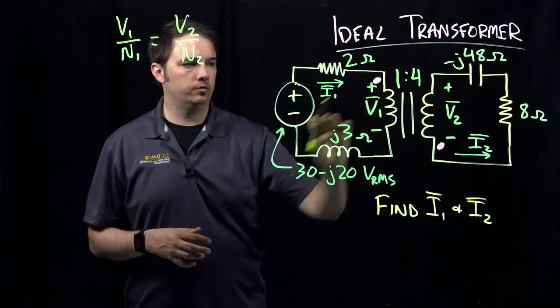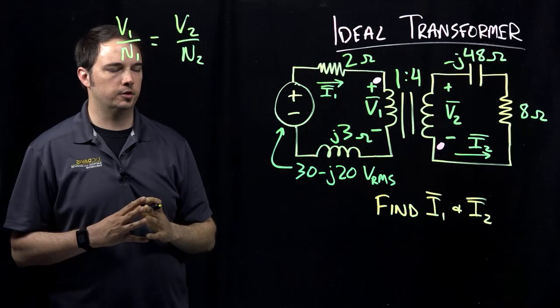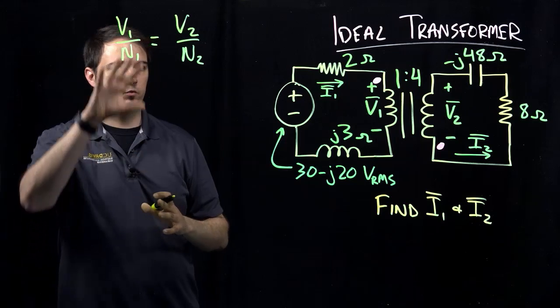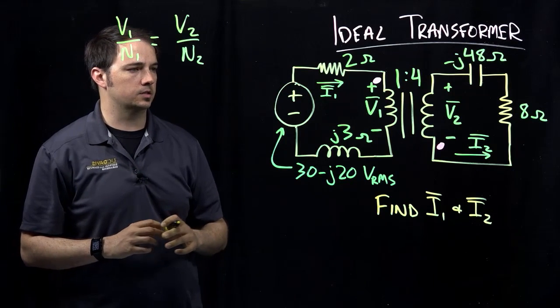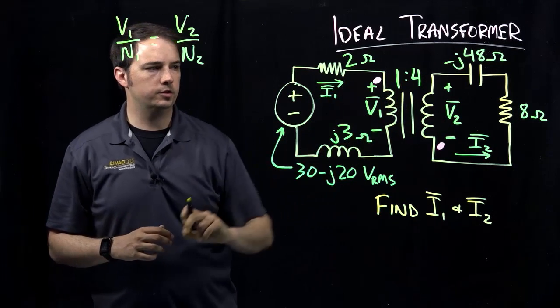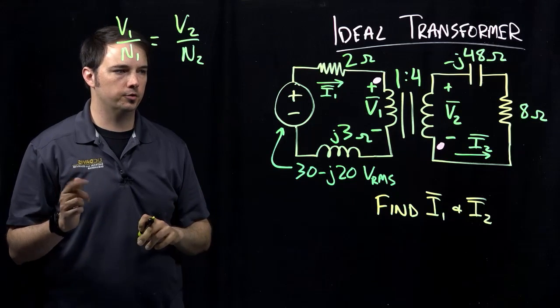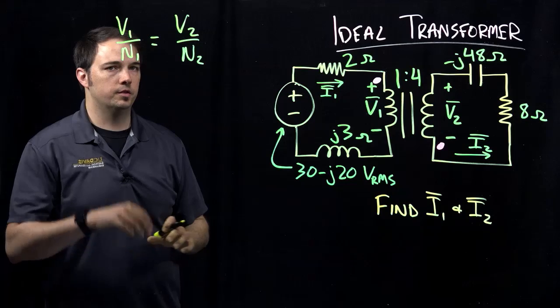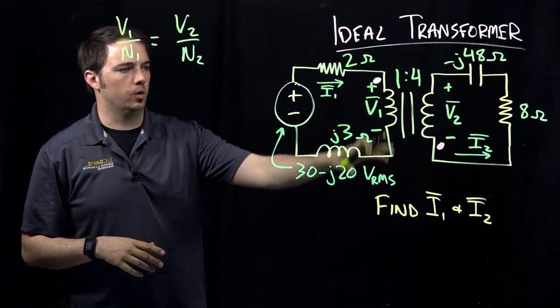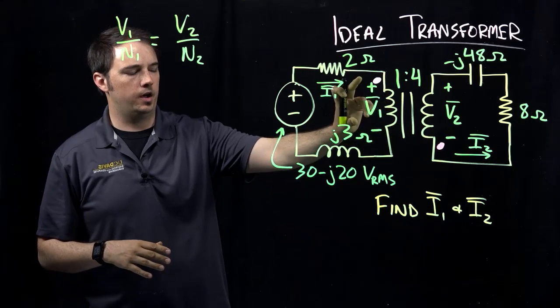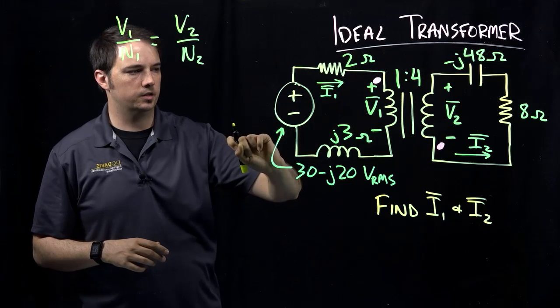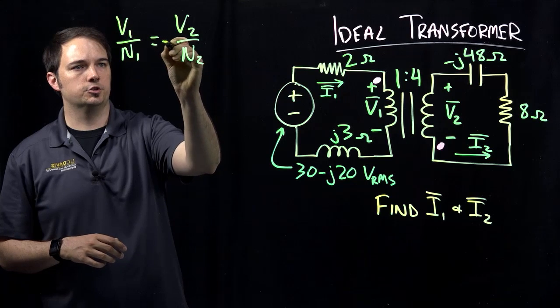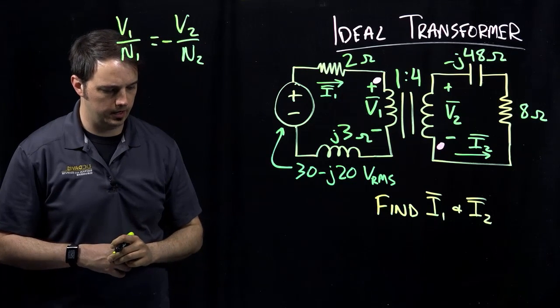So again here looking at the dots that are given to us in the problem. And because the voltages of V1 and V2 are defined for us, we can simply apply the dot convention that we know given what we have. So in this case, for this relationship that we're looking at, it tells us that if the voltages V1 and V2 are both positive or both negative at the dots of either of those coils, then this should be a positive relationship. However, what we see here is the opposite case where I have V1 is positive at the dotted terminal, but V2 is negative at the dotted terminal. So that tells me that this relationship should in fact include a negative sign.